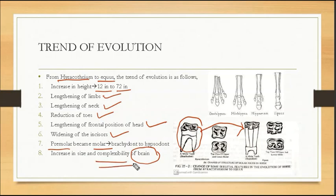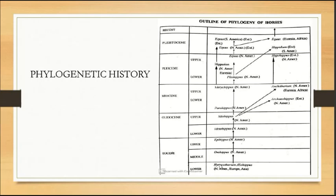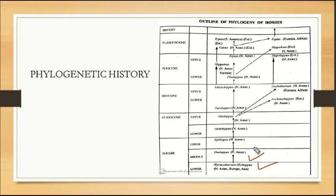There is also an increase in size and complexity of the brain — the more advanced the horse, the larger the brain. Then we can see the phylogenetic history. The phylogenetic history starts at the bottom with Eohippus. Eohippus is from North America, Upper Eocene, which then leads to Epihippus. The Oligocene stage gives Mesohippus, and the Upper Eocene gives Miohippus.